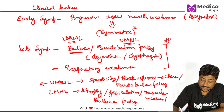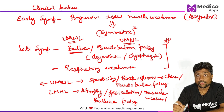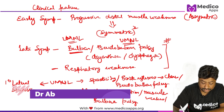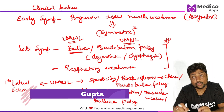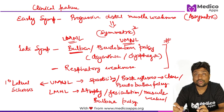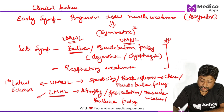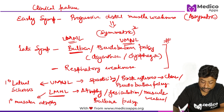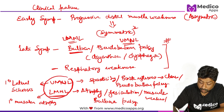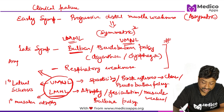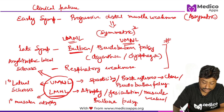If there are only upper motor neuron lesion features in a patient, we call this primary lateral sclerosis. If there is only lower motor neuron lesion, we call it primary muscular atrophy. Only when you have both upper motor neuron lesion features as well as lower motor neuron features, then we call it amyotrophic lateral sclerosis.